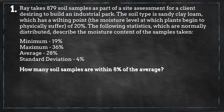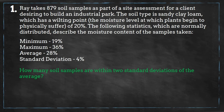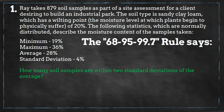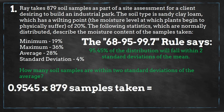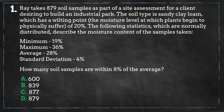Now that we know that 8% is the same as two standard deviations, let's switch out the question: how many soil samples are within two standard deviations of the average? The 68-95-99.7 rule says that 95.45% of the distribution will fall within two standard deviations. We multiply 0.9545 times 879 and we get 839 samples. Looking at our answer choices, this is answer B.